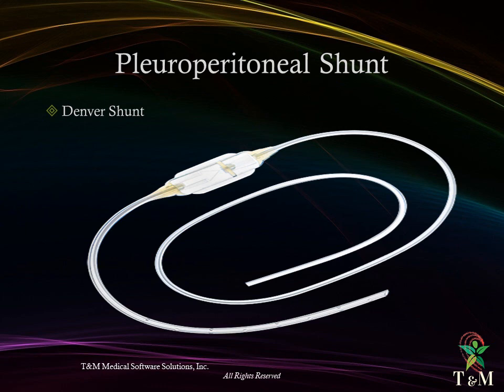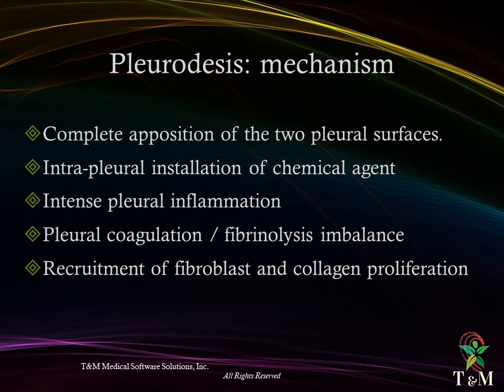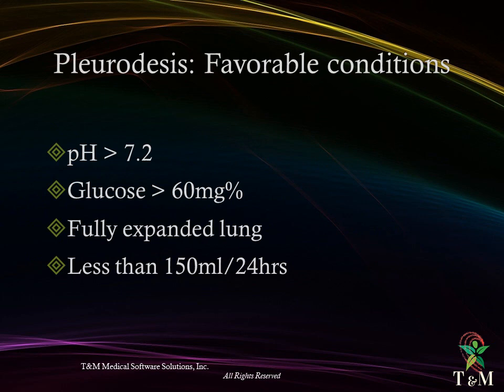Mechanism of pleurodesis: complete opposition of the two pleural surfaces, intrapleural installation of a chemical agent, intense pleural inflammation, pleural coagulation-fibrinolysis imbalance, recruitment of fibroblasts, and collagen proliferation. Favorable conditions for pleurodesis include pH more than 7.2, glucose level in pleural fluid more than 60 mg%, fully expanded lung, and drainage less than 150 ml per 24 hours.